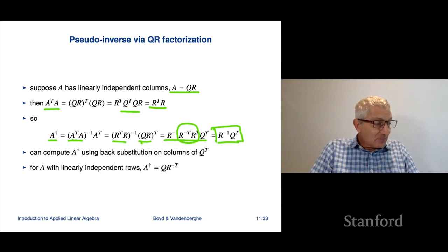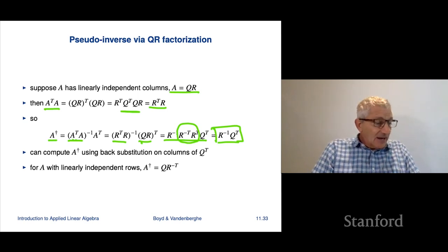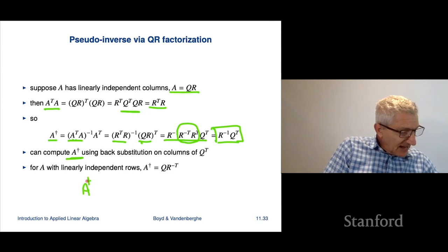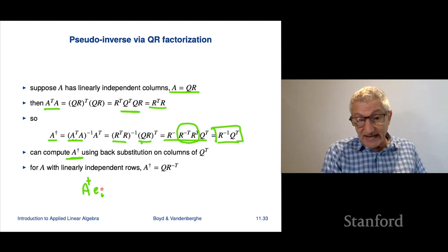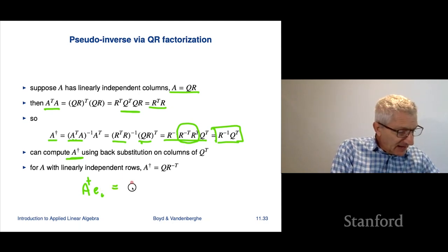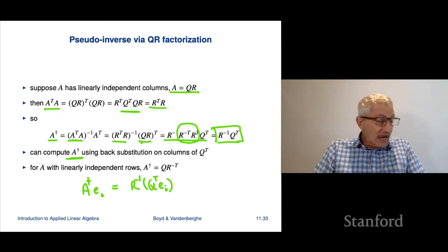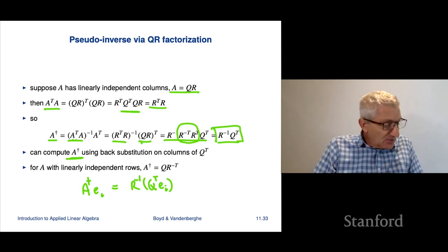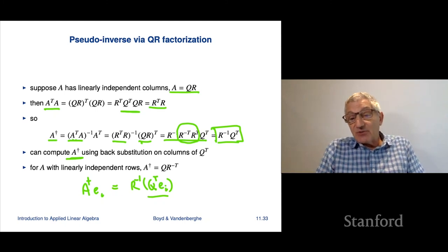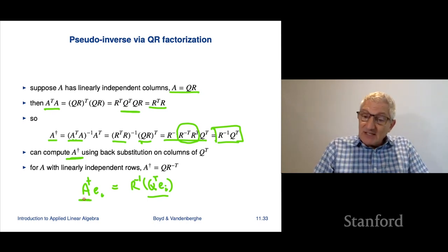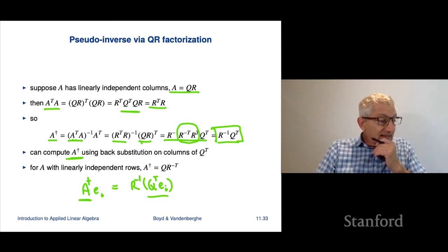So A dagger equals R inverse Q transpose — a very clean formula for the pseudo-inverse of a matrix with linearly independent columns. To compute A dagger, you do a QR factorization of A, then for each column of Q transpose, perform back substitution with R. This gives you the columns of A dagger one by one.